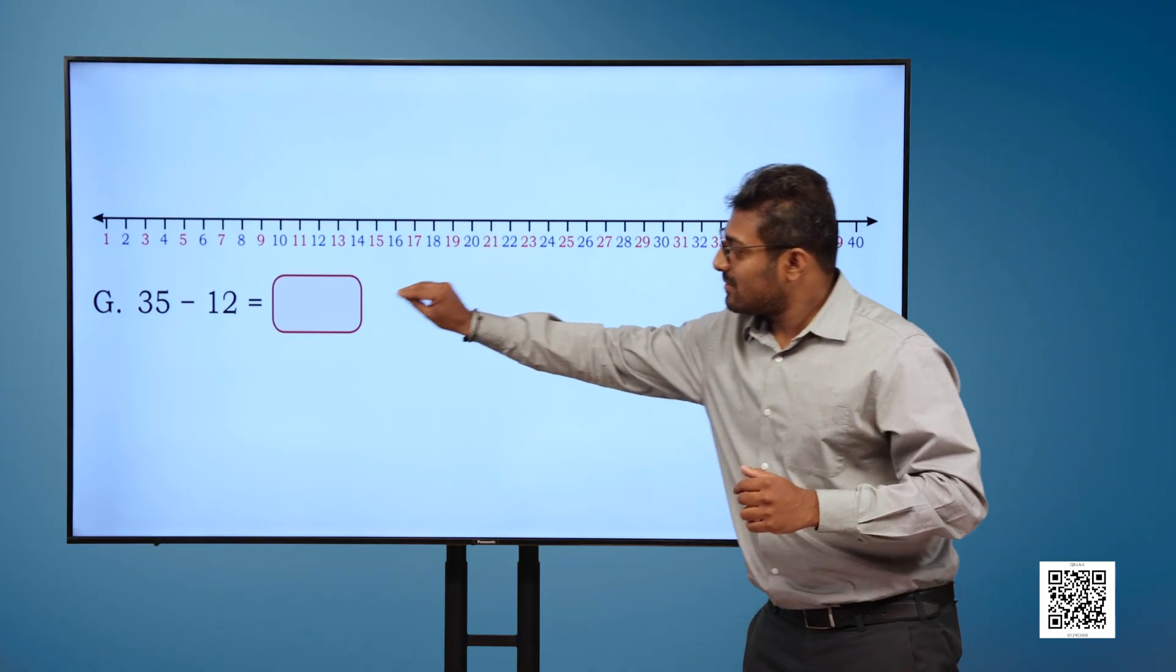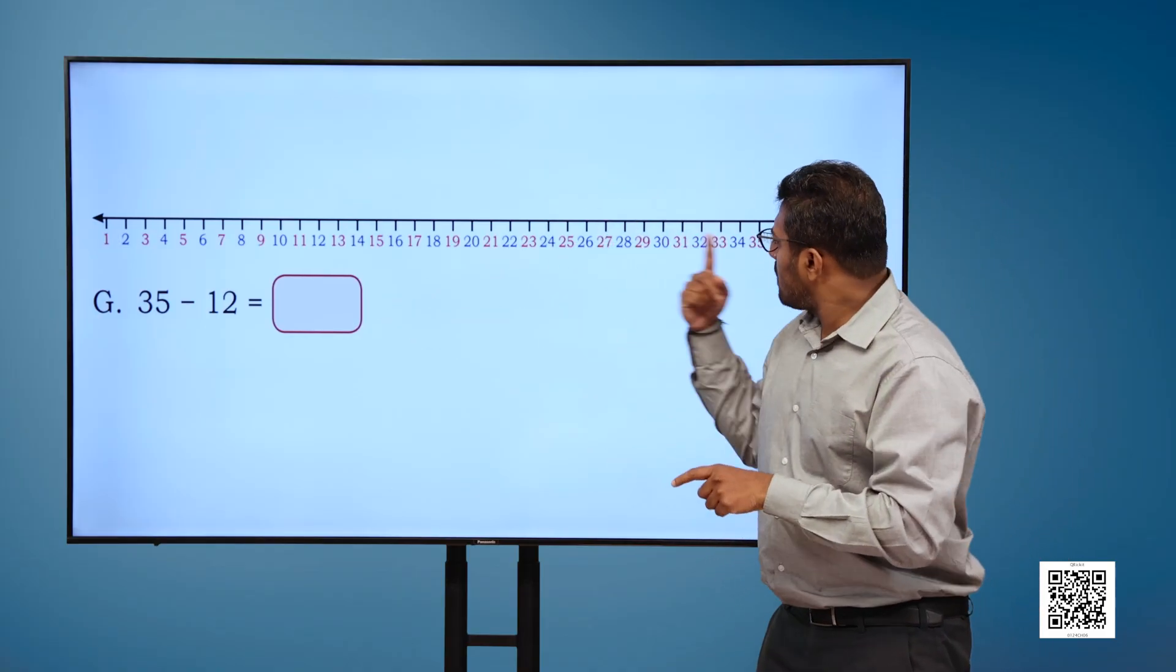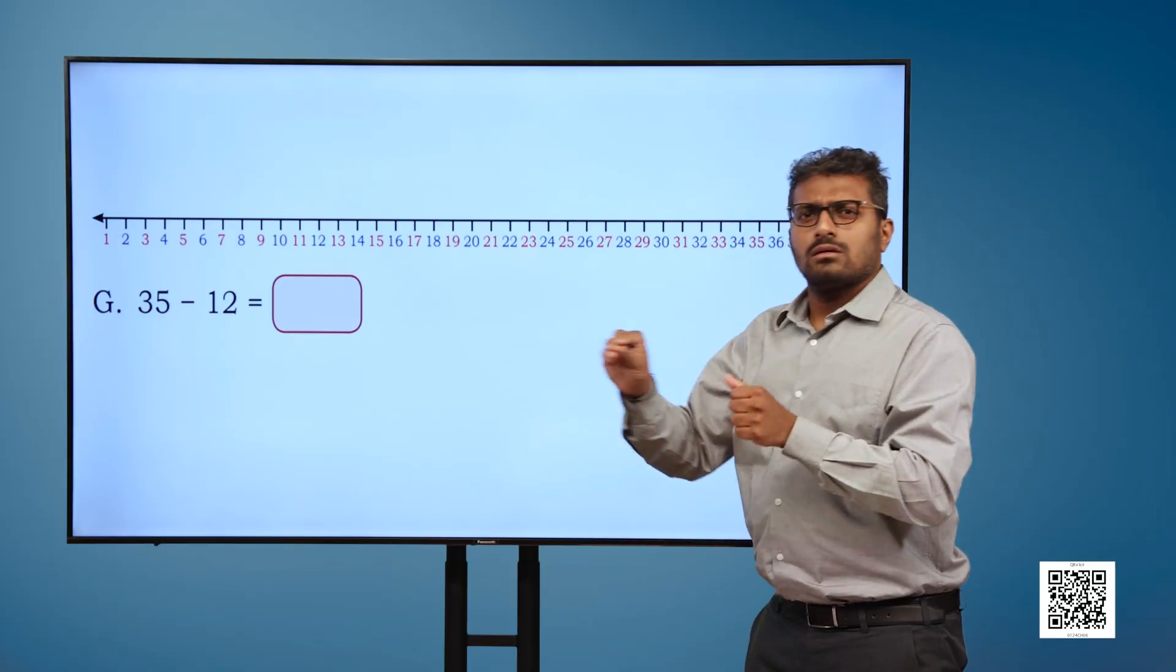C. 35 minus 12 is equal to blank. Mark your answer on the number line.